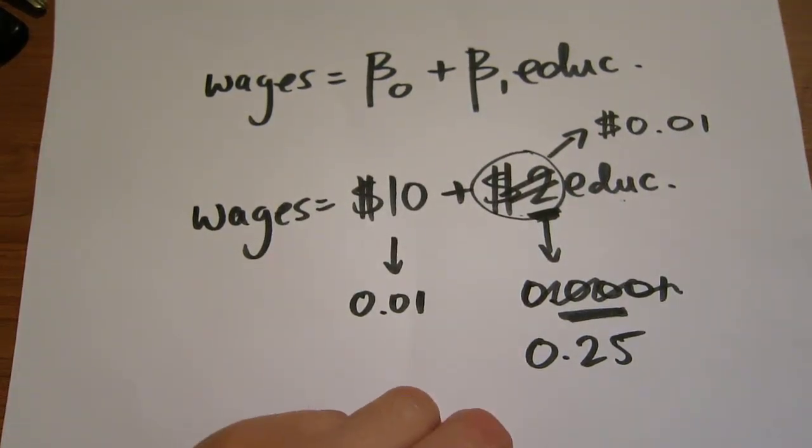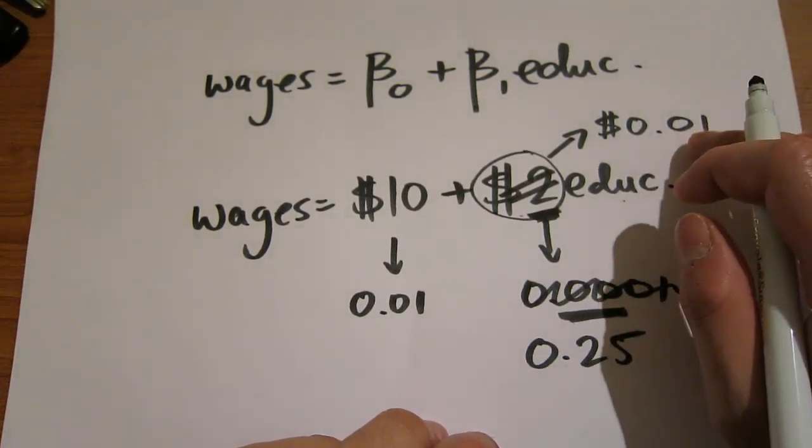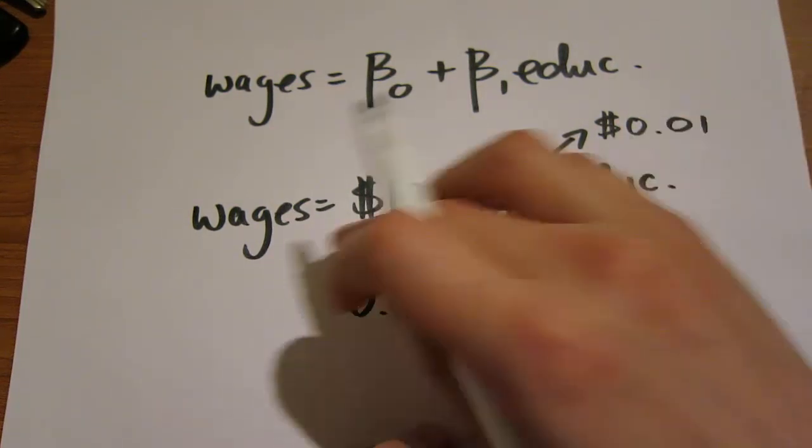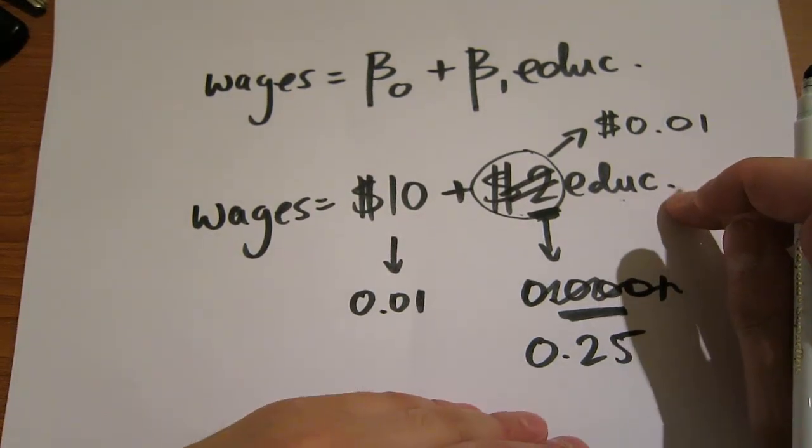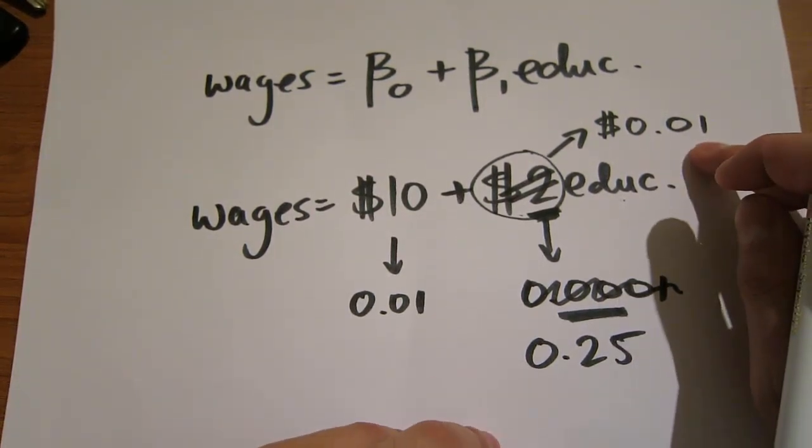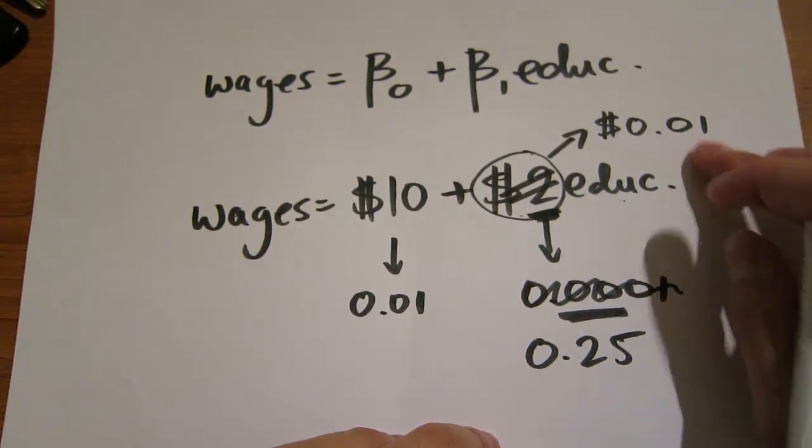Is that a big number? Would you pursue a PhD and do an extra eight years of education knowing that one year leads to a $0.01 wage increase? That's economically insignificant. I wouldn't do a PhD if my wage would only increase by $0.01 per year.